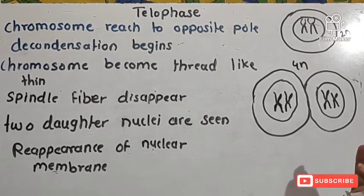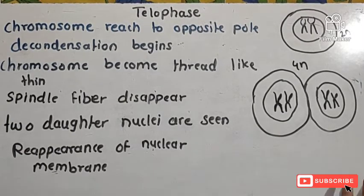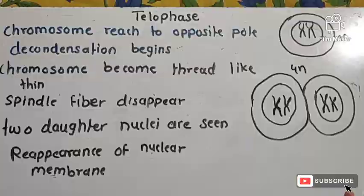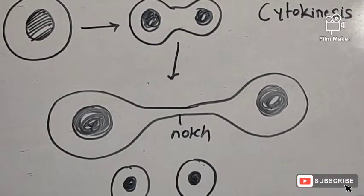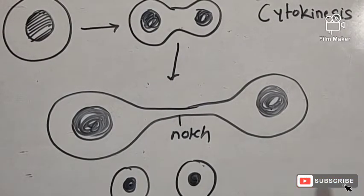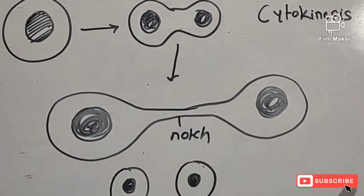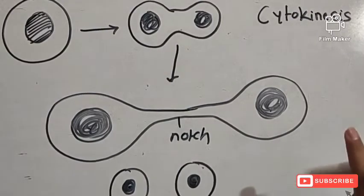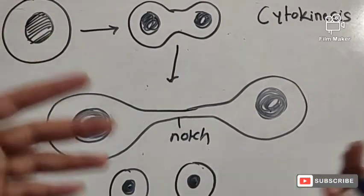The next process after karyokinesis is cytokinesis, which is the last process of mitosis. Mitosis has two main processes: first karyokinesis, which includes prophase, metaphase, anaphase, and telophase, and second is cytokinesis.